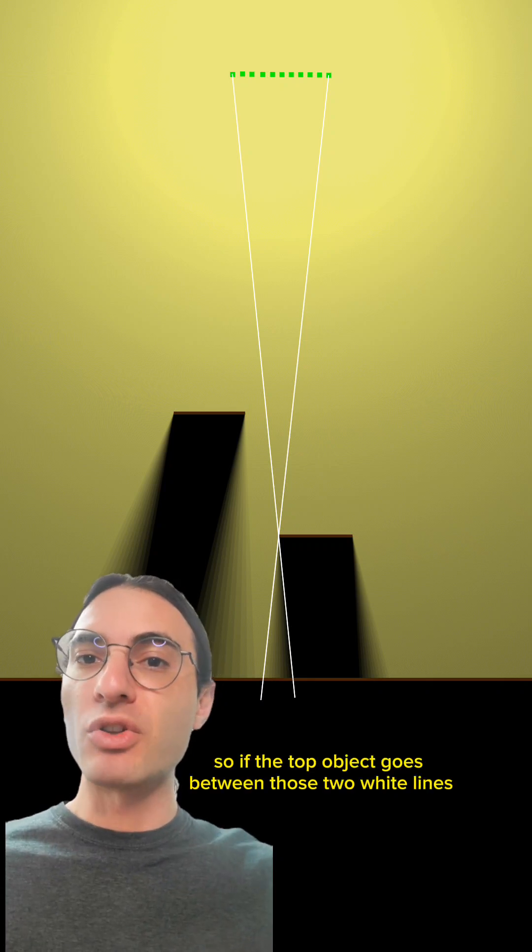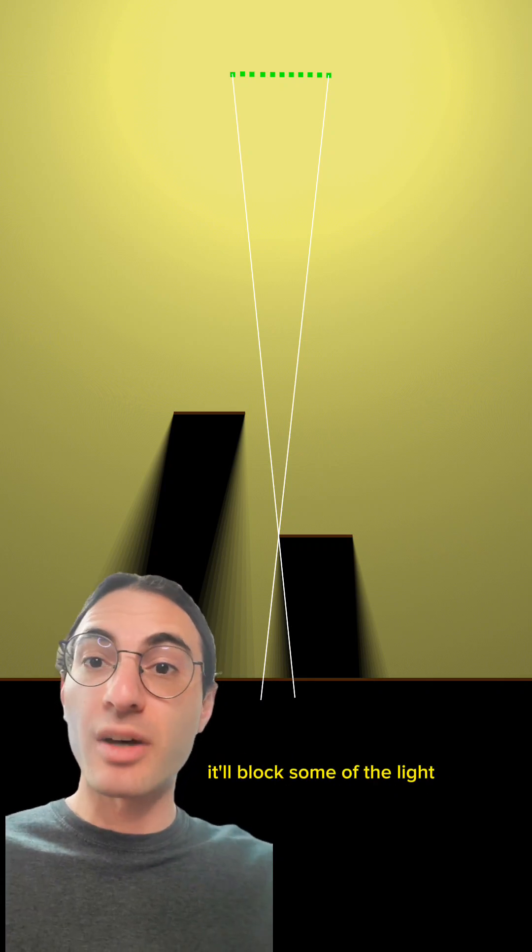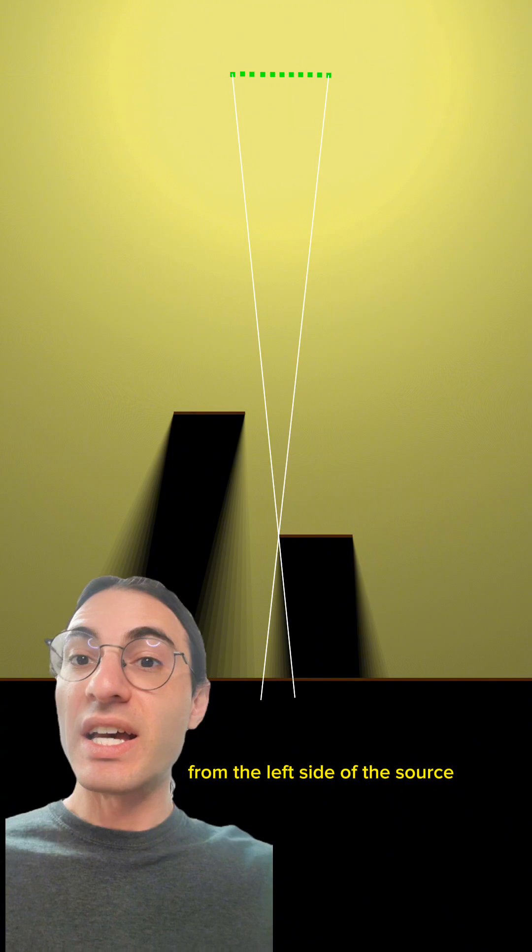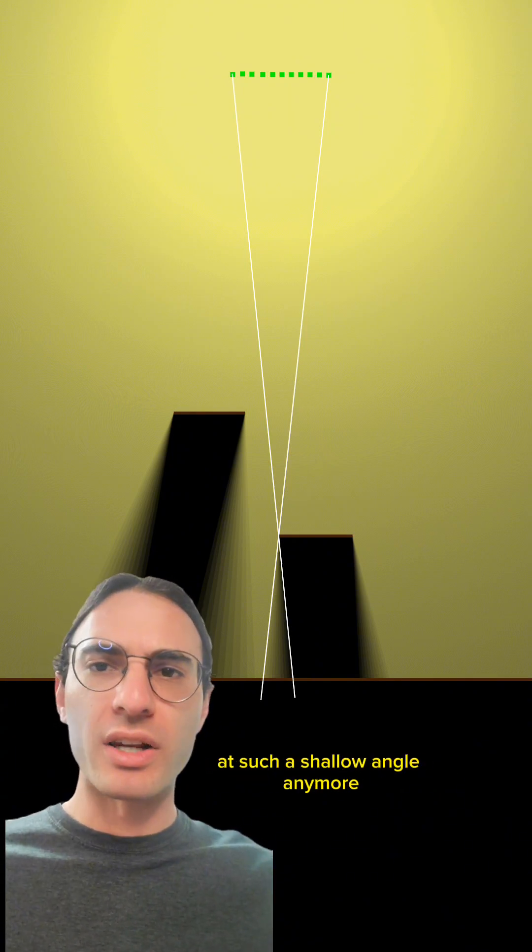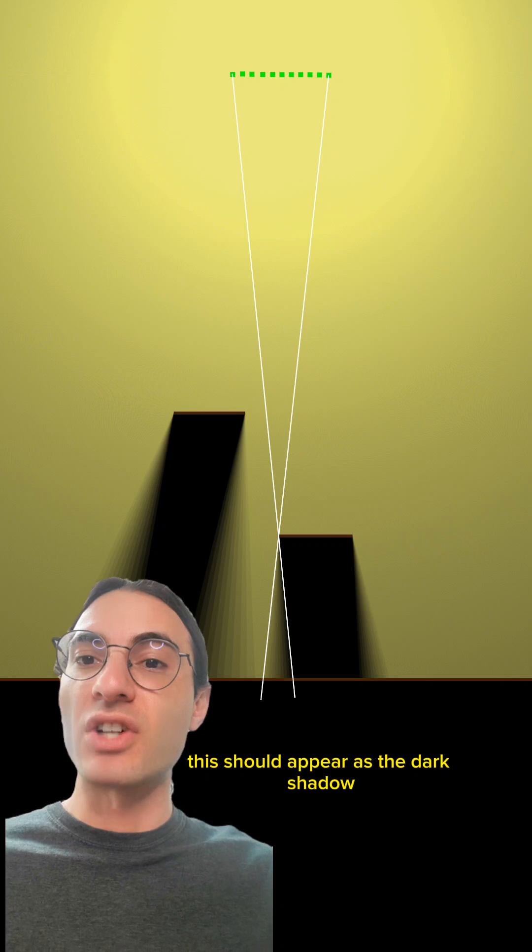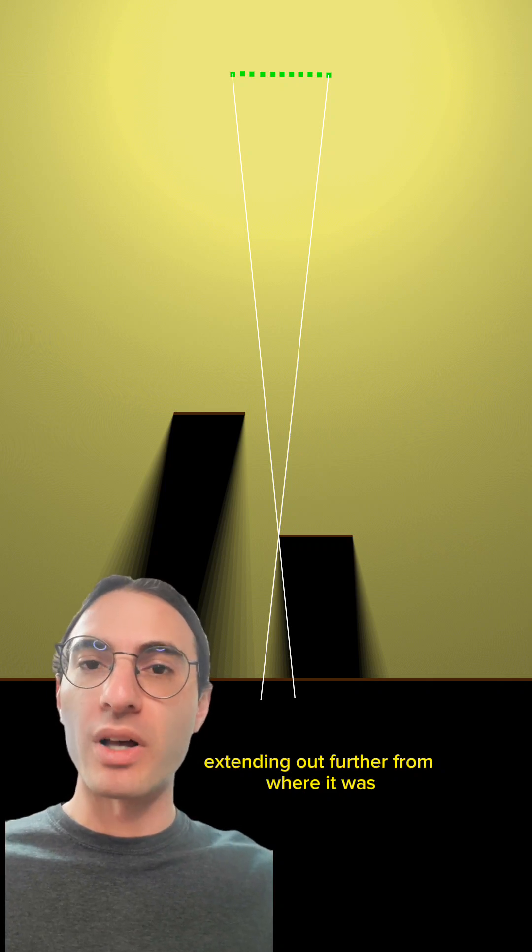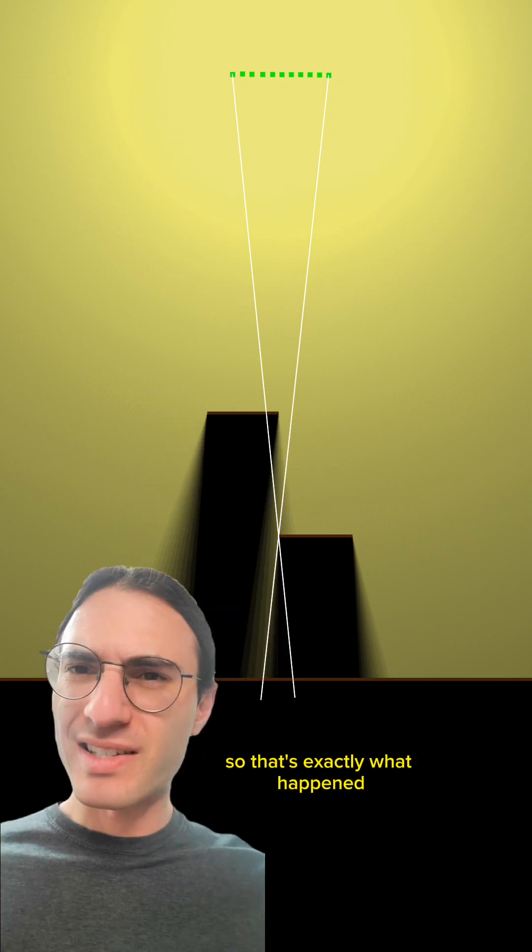So if the top object goes between those two white lines, it'll block some of the light from the left side of the source, extending the umbra because the light won't be able to come in at such a shallow angle anymore. This should appear as the dark shadow extending out further from where it was. Let's see. Hey, so that's exactly what happened.